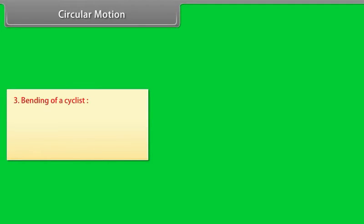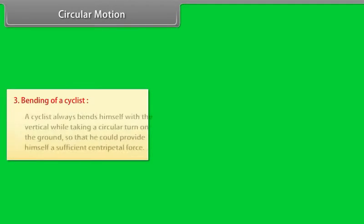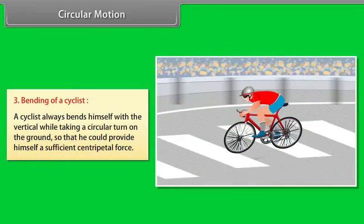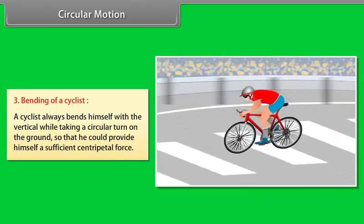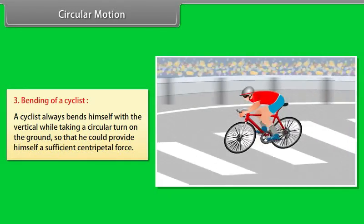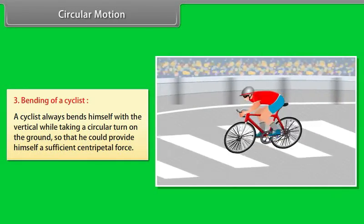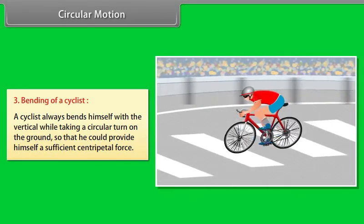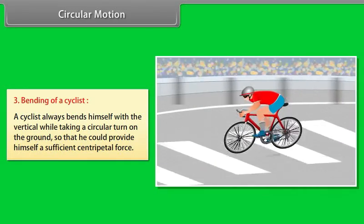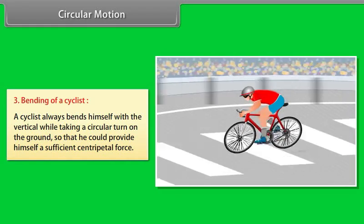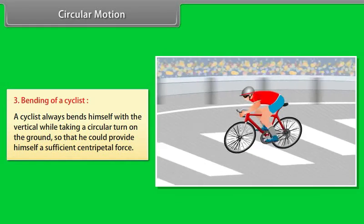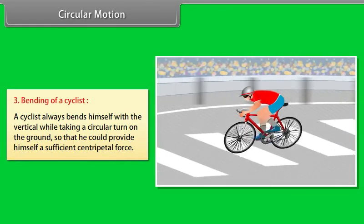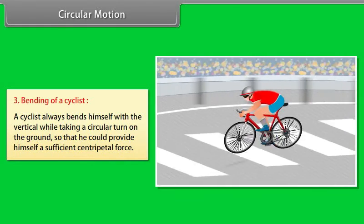Example 3 — Bending of a Cyclist: A cyclist always bends towards the vertical while taking a circular turn on the road so that sufficient centripetal force can be provided.